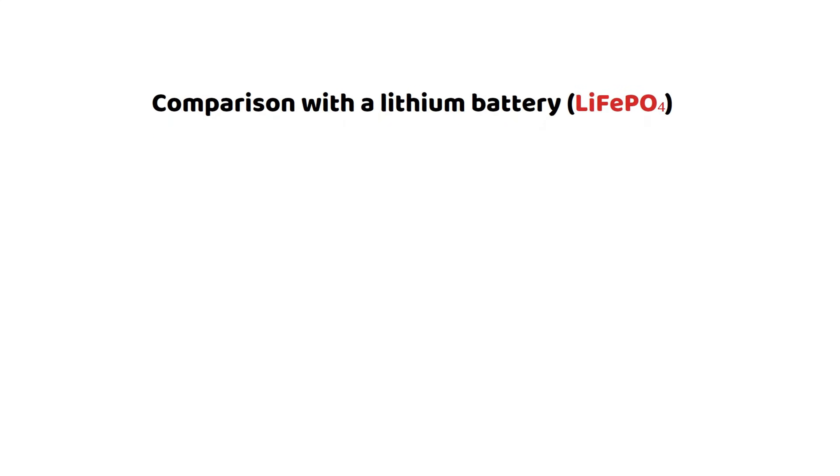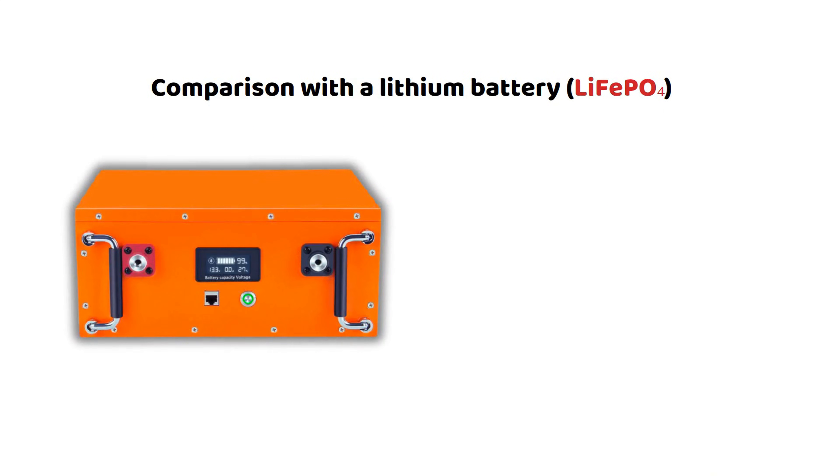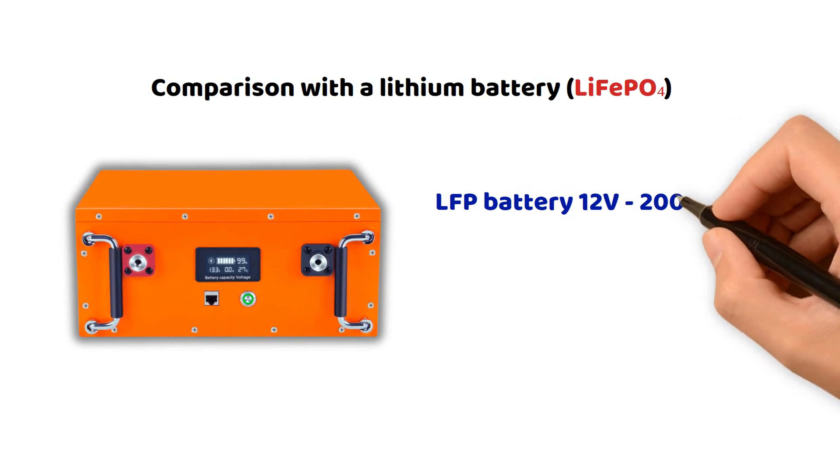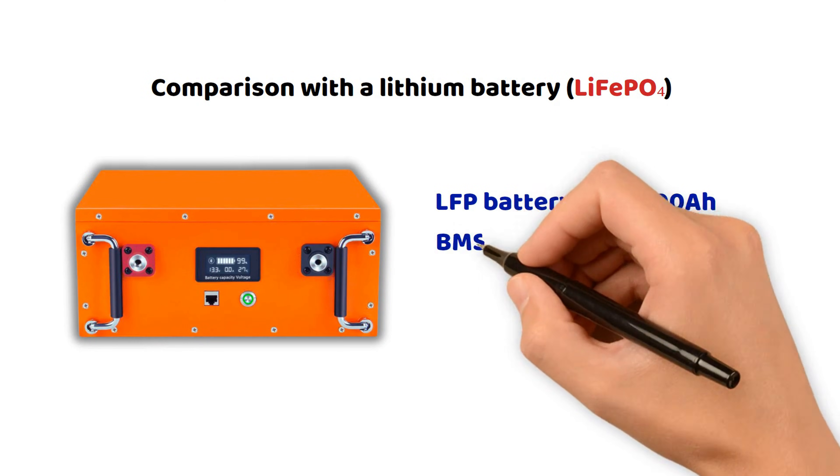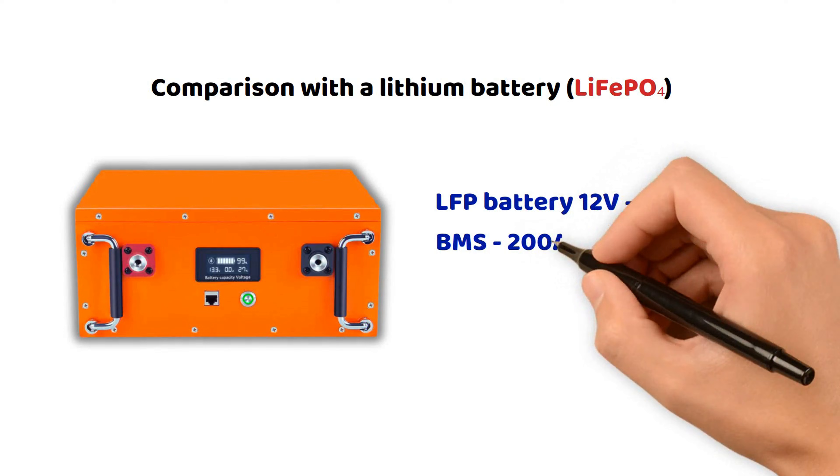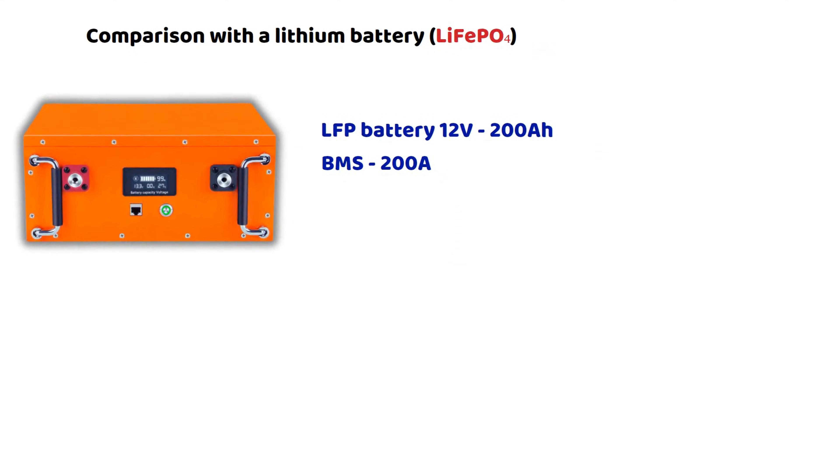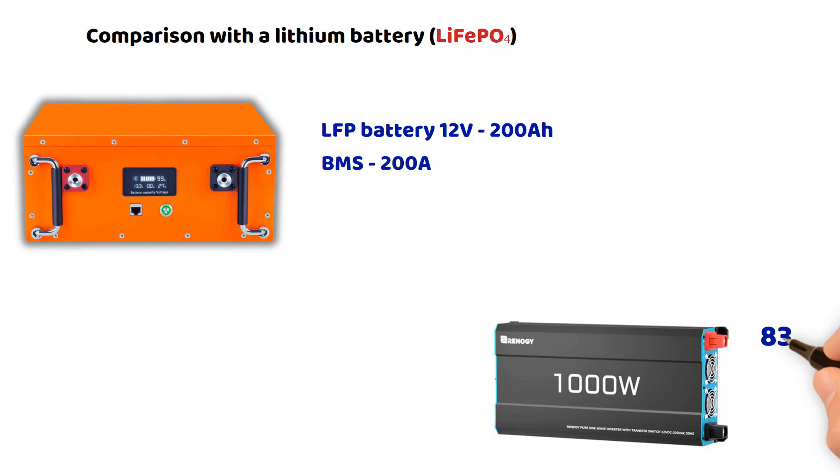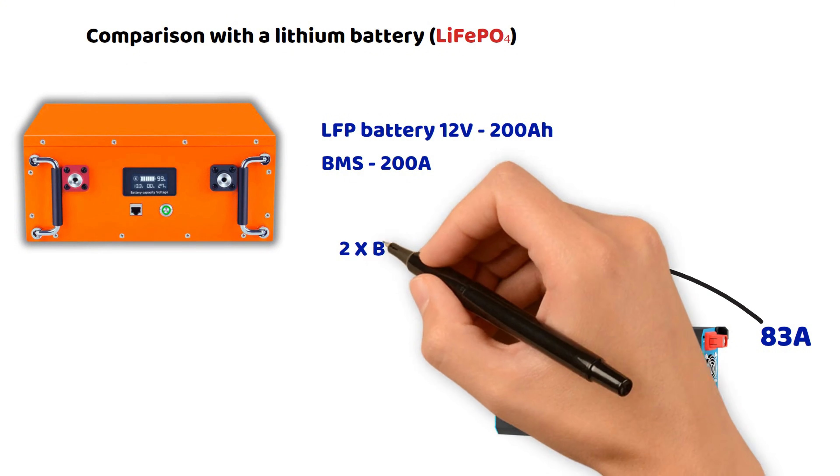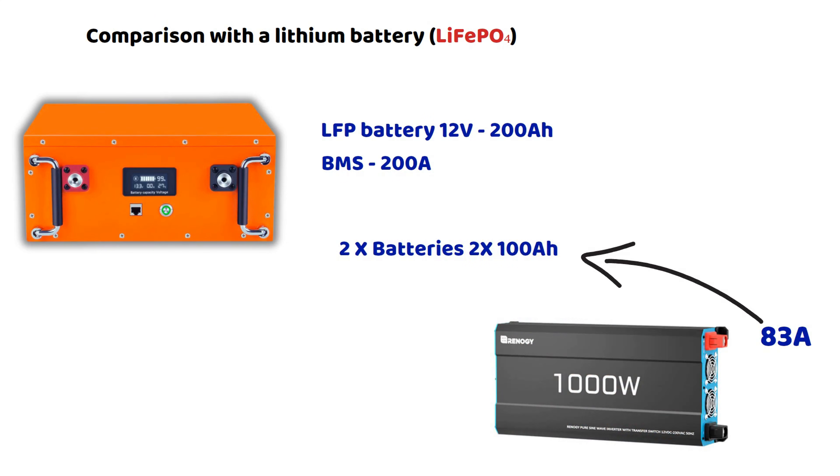Now, if we take a single lithium battery of 100 ampere hours, 83 amperes for a battery management system of 100 amperes is acceptable. But if we want to preserve the battery over time, two batteries of 100 ampere hours in parallel would be a better option. Or, as mentioned above, a 200 ampere hour LFP battery with a 200 ampere battery management system, which is even simpler.